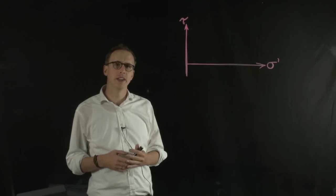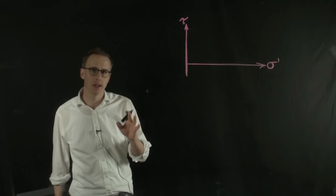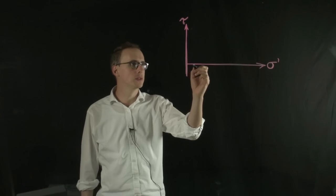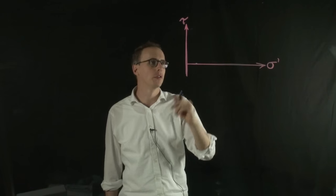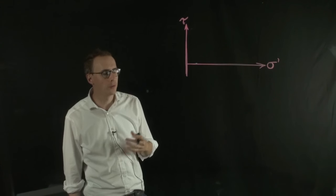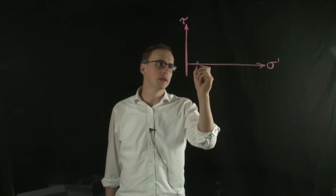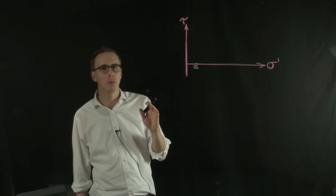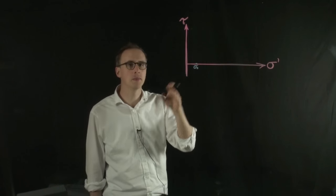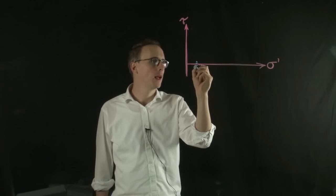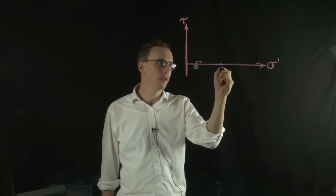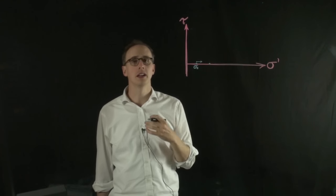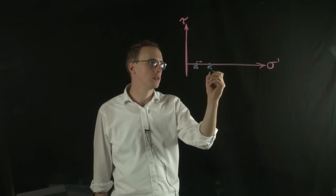In a drained triaxial test, we usually start sigma-1 and sigma-3 at around the same value, the same pressure. We start the test off at the same point. In a triaxial test, you'd keep sigma-3 constant and increase sigma-1 up the axis until you got to the point of failure. At the point of failure, you'd record the axial stress, that's sigma-1.